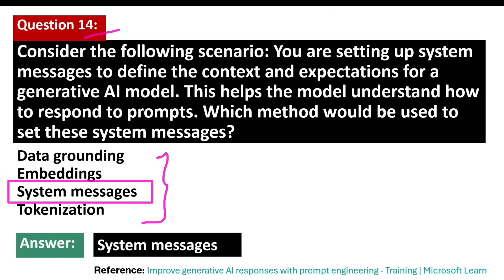What are system messages? System messages are instructions or guidelines set for a generative AI model to help it understand the context and expectations for responding to prompts. They act like a roadmap, guiding the AI on how to handle different types of queries, ensuring that the model's responses align with the intended use. Benefits include clarity, consistency, safety, and efficiency.